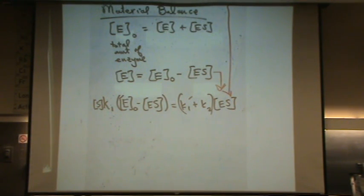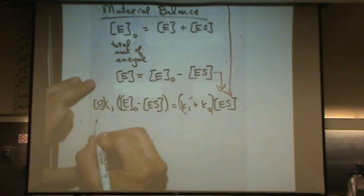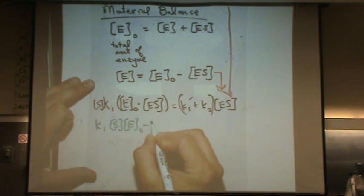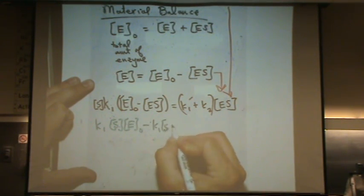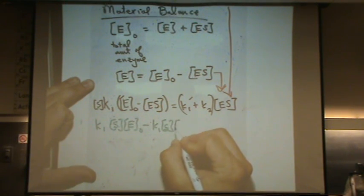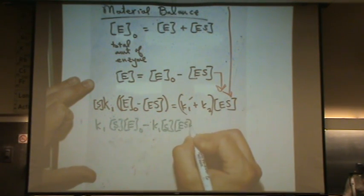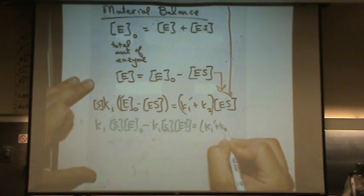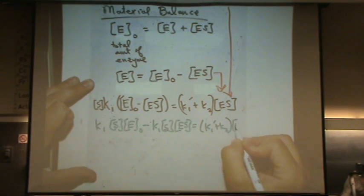So let me get a different color and multiply this out. We've got K1, we've got S, E naught, minus K1, S, ES, equals, same thing on the right hand side, K1 prime plus K2, ES.